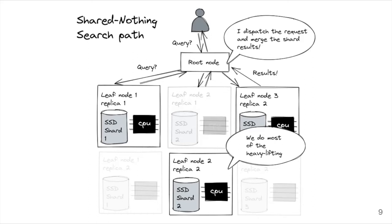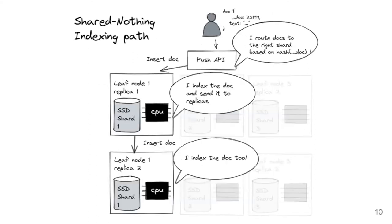That's the read path — the search path. There's another path called the write or indexing path. The system exposes an API where when you push data, you hit a coordination node. That coordination node, based on some ID of the data and usually a consistent hashing or rendezvous hashing algorithm, determines which shard is correct. Once the shard is found, the document is forwarded to each replica, and each replica indexes the document locally and adds it to the index.